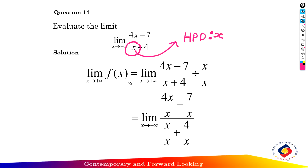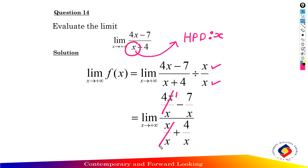So find the limit as x approaches positive infinity of f(x), which equals the limit as x approaches positive infinity of 4x minus 7 over x plus 4. First step: divide both numerator and denominator by x. So 4x minus 7 divided by x, and denominator x plus 4 divided by x. So 4x over x minus 7 over x — x over x equals 1 — and denominator x over x equals 1, plus 4 over x.